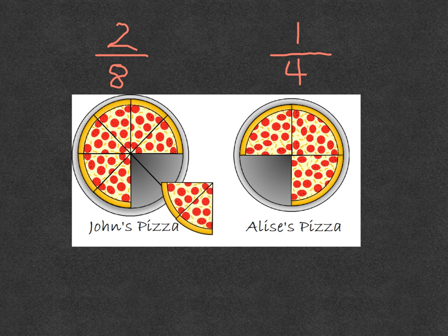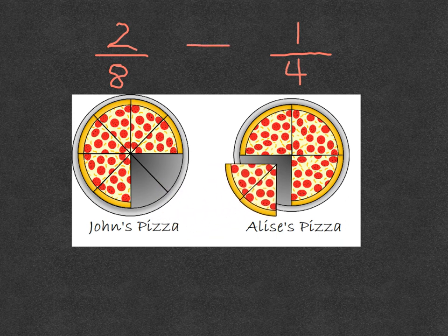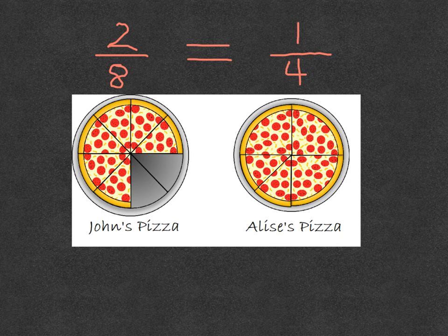Two eighths of John's pizza is the same, or equal to, one fourth of Elise's pizza. We say that two eighths and one fourth are equivalent fractions.